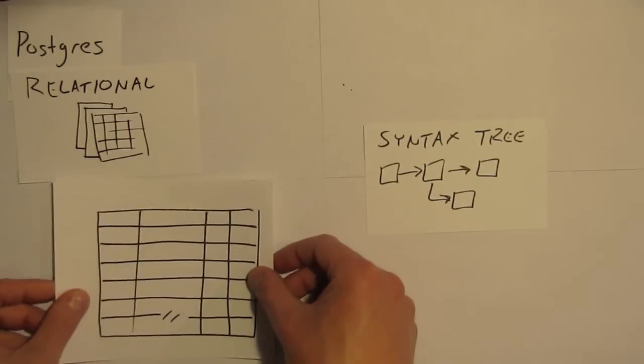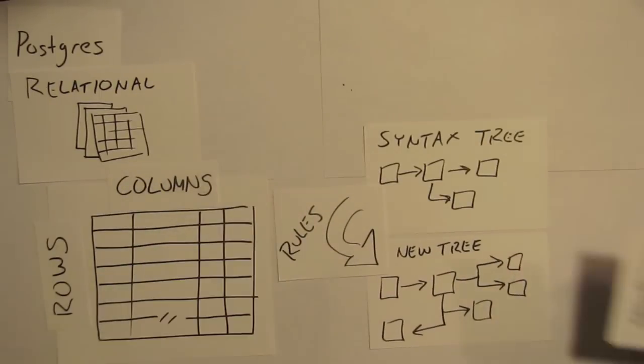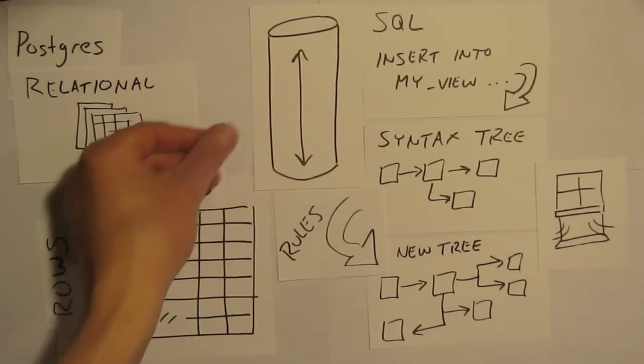Postgres is relational, stable, transactional - tables of columns and rows. Rules, window functions, and SQL for querying. Vertically is how it grows.